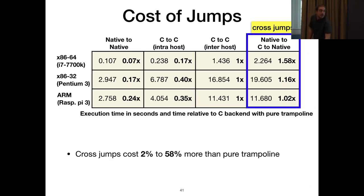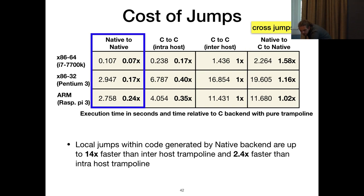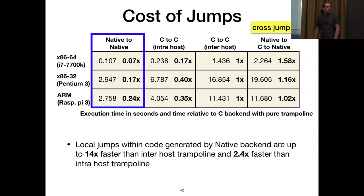The cross-jump variant is between 2% and 58% slower than the trampoline-only time. Comparing native-only to the C-only benchmark, it's 14 times faster than the benchmark that uses the trampoline, and about 2 times faster than the benchmark that doesn't use it.